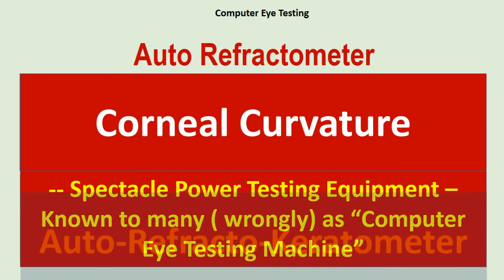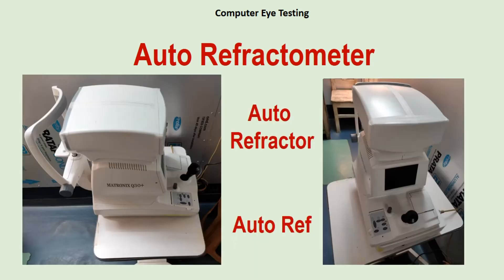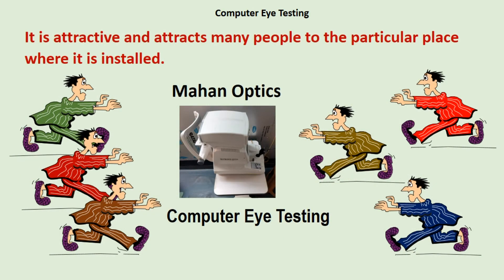These machines are called auto refractor keratometers, but this is not widely used. A number of companies manufacture these equipments with different modifications of the basic unit. These machines are also costly, but one thing is for sure — they are attractive and attract many people to the particular place where it is installed.